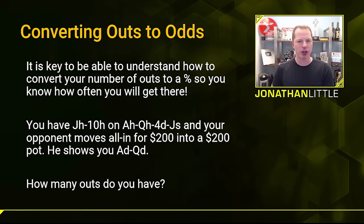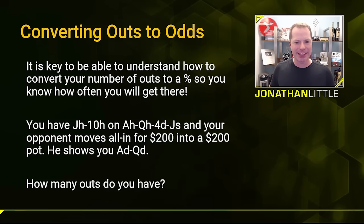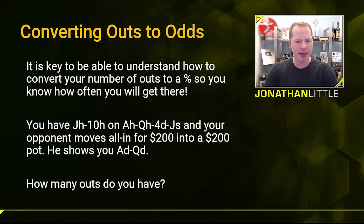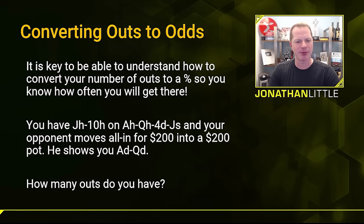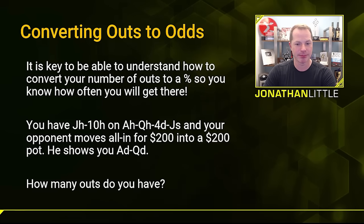Next, let's discuss converting outs to odds. It is key to be able to understand how to convert your number of outs to a percentage of actually getting there, in order to figure out if you're going to be getting the right price to continue. Let's say you have jack-ten of hearts on a board of ace of hearts, queen of hearts, four of diamonds, jack of spades. And your opponent moves all in for $200 into a $200 pot — so they bet the size of the pot. He shows you the ace-queen of diamonds because he's friendly. First things first, how many outs do you have? Take a second and think about it.